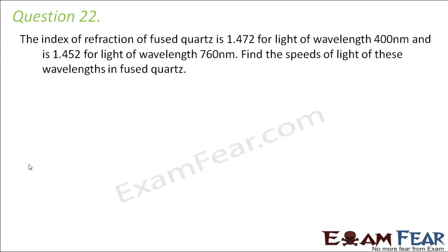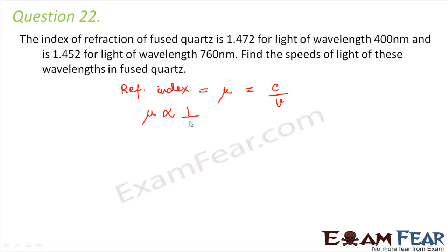Question number 22. The index of refraction of fused quartz is 1.472 for light of wavelength 400 nanometers and is 1.452 for light of wavelength 760 nanometers. Find the speeds of light of these wavelengths in fused quartz. Refractive index mu is equal to the ratio of speed of light in vacuum to speed of light in any other medium. Since c is always constant, refractive index is inversely proportional to the velocity.